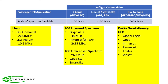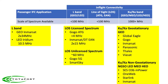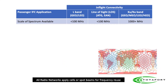Ku and Ka-band satellite networks fly in different orbits. Traditional services are in geostationary orbit, or GEO. Emerging services are in non-geostationary orbit, or NGSO. These include low-earth orbit (LEO), medium or mid-earth orbit (MEO), and highly elliptical orbit (HEO). Every modern network reuses spectrum by applying cells or spot beams.